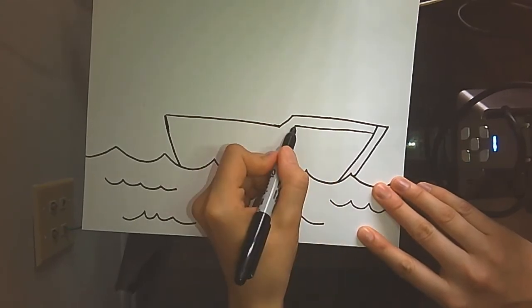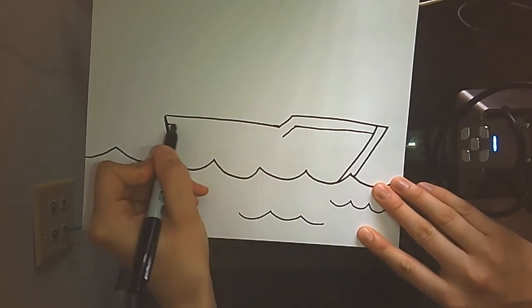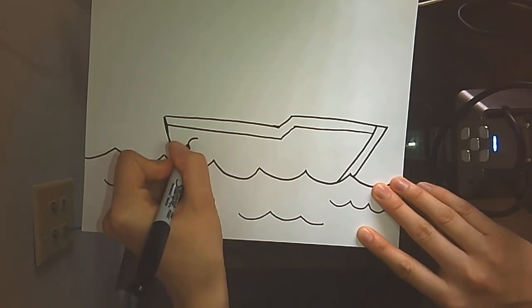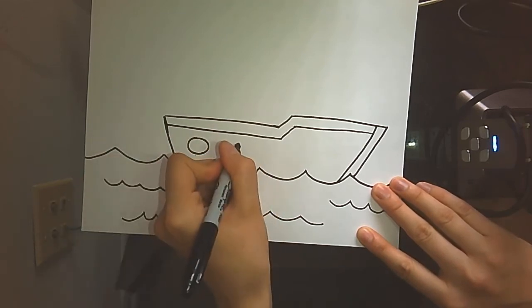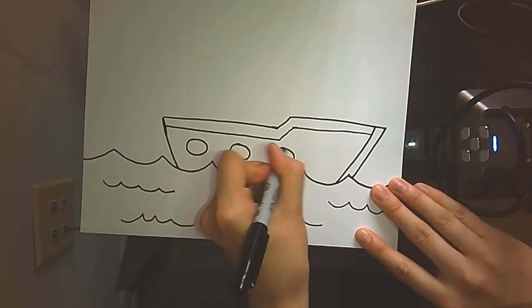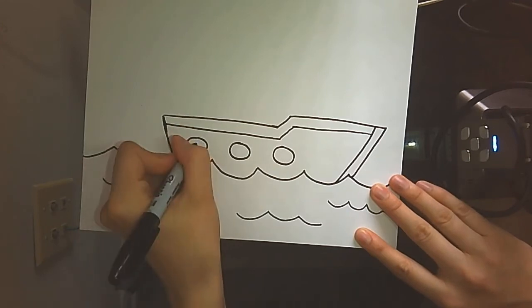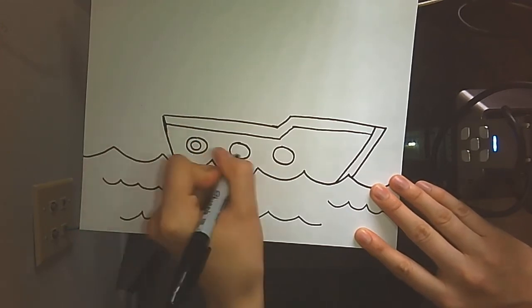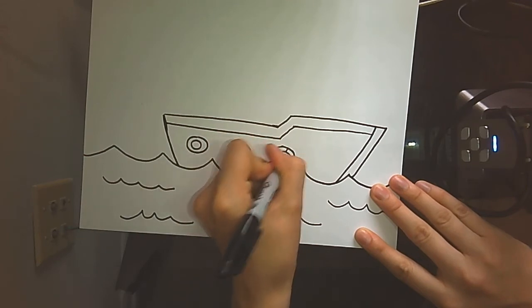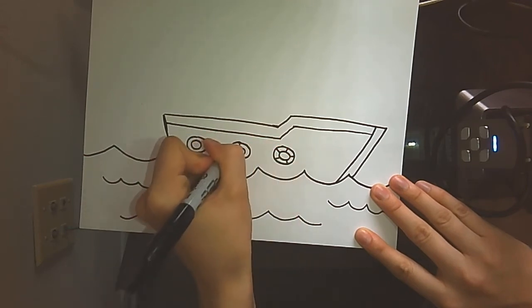Now I'm just gonna add some details to my boat. You can add any details that you want. Sometimes boats, especially these old boats, had cannons on them or they had something fancy decorating the front of the ship. You're more than welcome to add your own details. Make it your own boat. You can even write a name for it. You always got to name your ship. So these are just little windows on mine.